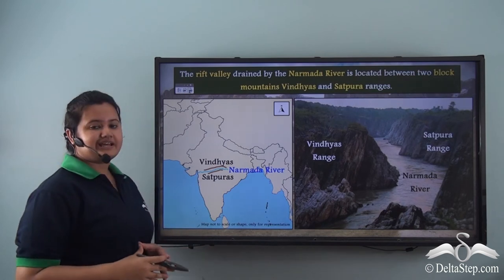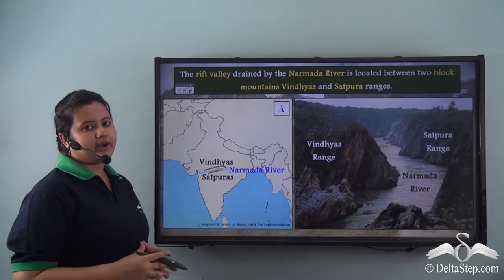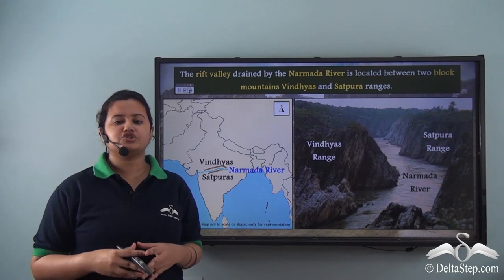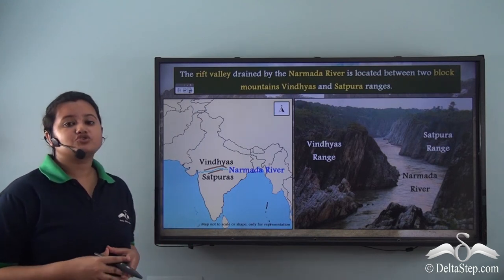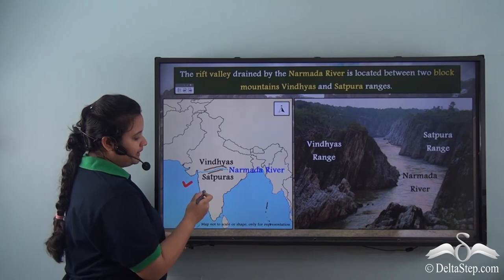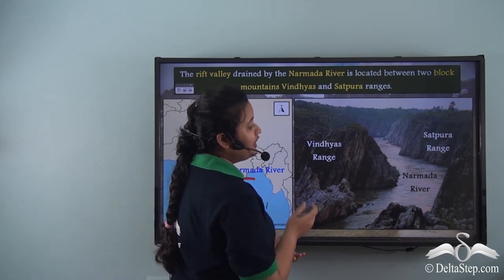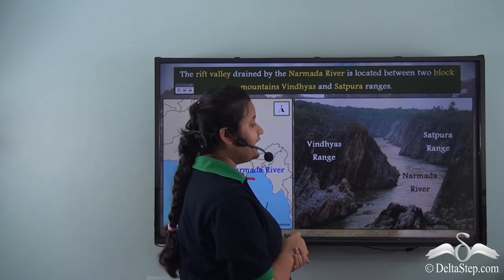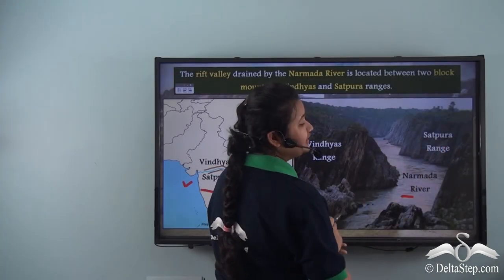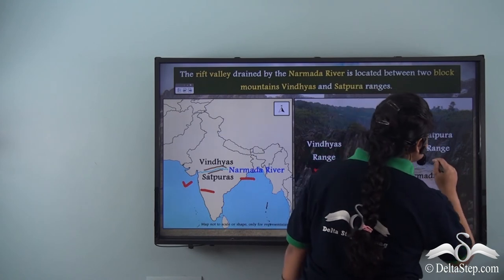When the land between two fault lines submerges, a rift valley is formed. Sometimes a rift valley is drained by a river, leading to the formation of a rift valley lake. One such rift valley is present in India, in the central part of the country, drained by the Narmada river. There are two mountain ranges on both sides of this rift valley, representing block mountains — the Vindhyas range and the Satpura range.